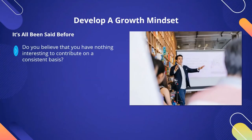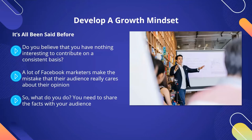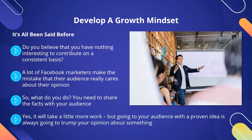Do you believe that you have nothing interesting to contribute on a consistent basis? After all, it has all been said before, right? Most unsuccessful Facebook marketers suffer from this limiting belief. You can certainly eliminate this belief fairly easily and quickly. A lot of Facebook marketers make the mistake that their audience really cares about their opinion. The harsh reality is that they don't and they never will, unless you are some kind of global superstar. So, what do you do? You need to share the facts with your audience. Provide data and evidence that what you are saying in your posts really works. Going to your audience with a proven idea is always going to trump your opinion about something. Your audience wants to achieve a specific result, so show them that you are the person to help them do this.